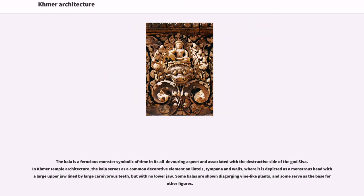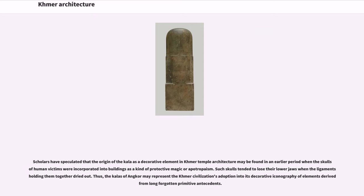The Kala is a ferocious monster symbolic of time in its all-devouring aspect, associated with the destructive side of the god Shiva. In Khmer temple architecture, the Kala serves as a common decorative element on lintels, tympana, and walls, depicted as a monstrous head with a large upper jaw lined by large carnivorous teeth but with no lower jaw. Some Kalas are shown disgorging vine-like plants, and some serve as the base for other figures. Scholars have speculated that the origin of the Kala may be found in an earlier period when the skulls of human victims were incorporated into buildings as a kind of protective magic or apotropaism. Such skulls tended to lose their lower jaws when the ligaments dried out; thus the Kalas of Angkor may represent the adoption into decorative iconography of elements derived from long-forgotten primitive antecedents.